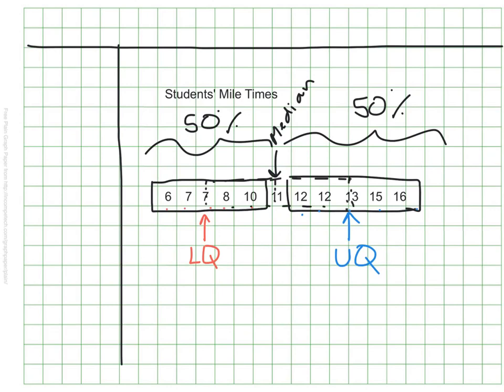So what does that tell us? What does that mean? That means that 25% of our kids can run a mile between 6 and 7 minutes. 25% of our kids run that same mile between 7 and 11 minutes. 25% are represented here, and 25% are represented here. So this is broken up into quarters.